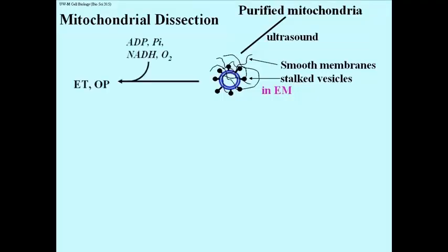When provided oxygen and a reduced electron carrier, these broken mitochondrial bits were able to oxidize NADH, consumed oxygen in the process and made ATP, just like intact mitochondria.